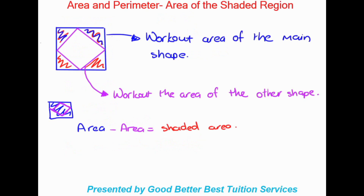That is basically the end of the lesson. This topic isn't that hard to grasp — I've done fairly diverse examples using different types of shapes. To recap quickly: the first step is always working out the area of the main shape, then secondly working out the area of the other shape inside. Once you've done that, you find the shaded region by subtracting. Thank you very much for joining us — I hope this lesson was informative and you took something away from it.